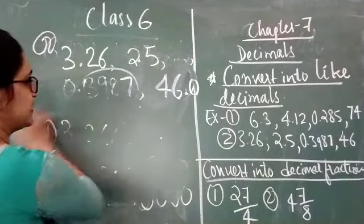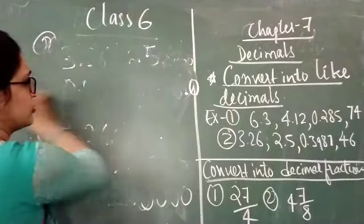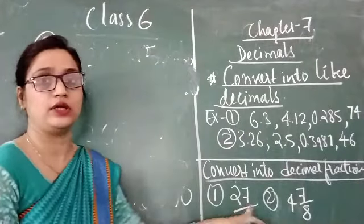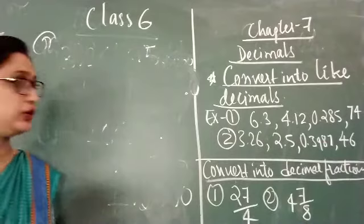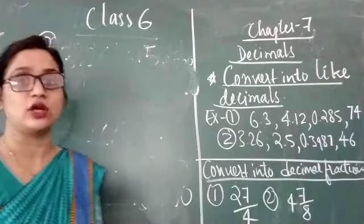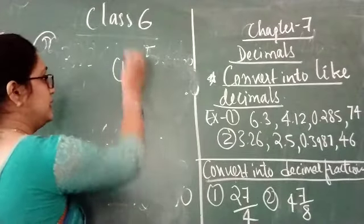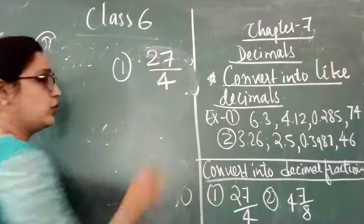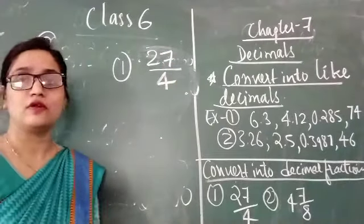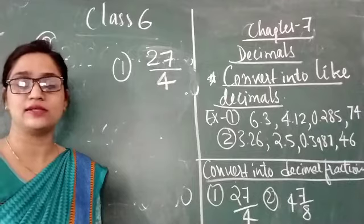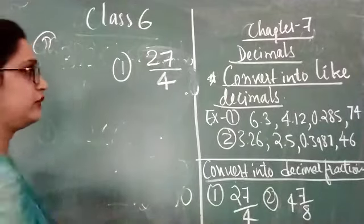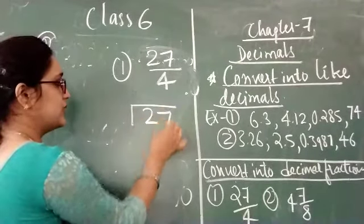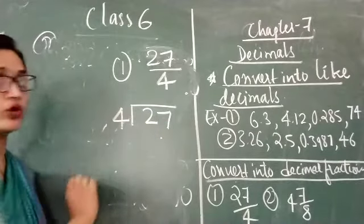Now the next topic is convert into decimal fractions. If normal fraction numbers are given, we have to convert them into decimal fractions. Question number 1 is 27 upon 4. It is very simple — we just have to divide these numbers. So on dividing 27 by 4: